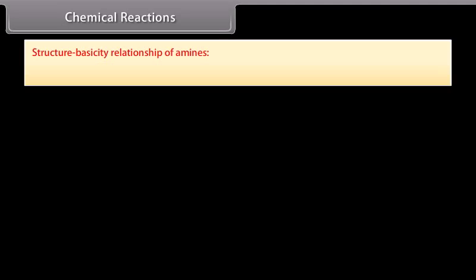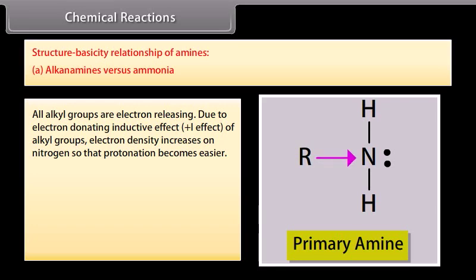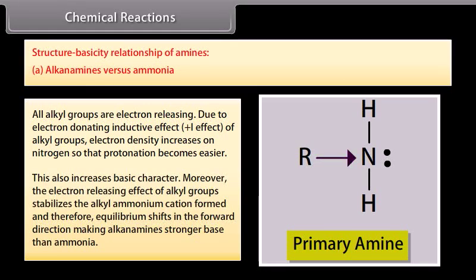Alkanamines vs. ammonia: All alkyl groups are electron-releasing. Due to the electron-donating inductive effect (positive I effect) of alkyl groups, electron density increases on nitrogen, making protonation easier and increasing basic character. The electron-releasing effect of alkyl groups also stabilizes the alkylammonium cation formed, shifting equilibrium forward and making alkanamines stronger bases than ammonia.